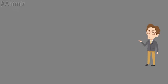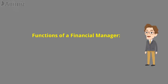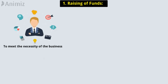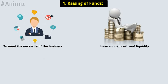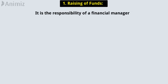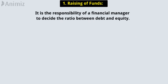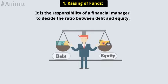Following are the main functions of a financial manager. First: Raising of Funds. In order to meet the necessity of the business, it is important to have enough cash and liquidity. It is the responsibility of a financial manager to decide the ratio between debt and equity. It is important to maintain a good balance between equity and debt.